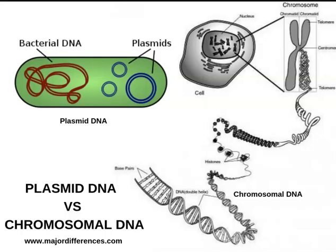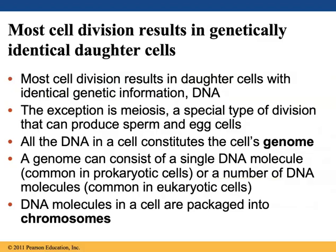All of the DNA in a cell constitutes the cell's genome. A genome can consist of a single DNA molecule — often a circular piece of DNA called a plasmid — which is common in prokaryotic cells such as bacteria and will be located in the nucleoid space. Or a genome can consist of a number of DNA molecules, which is common in eukaryotic cells. DNA molecules in a cell are packaged into structures called chromosomes. Human somatic cells each contain 46 individual chromosomes located in the nucleus.